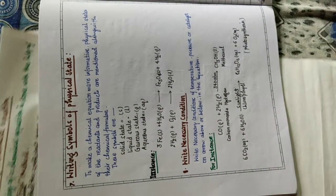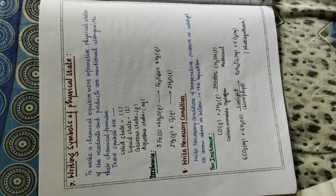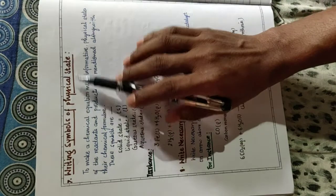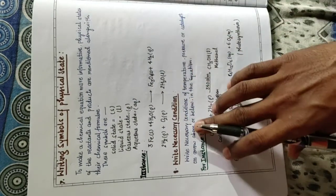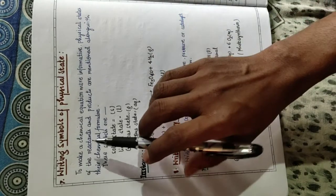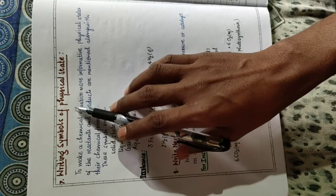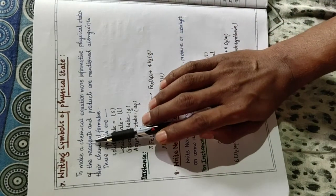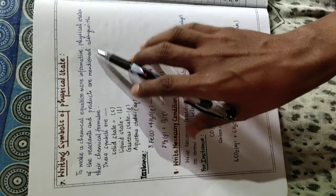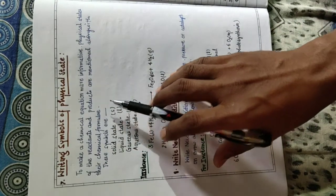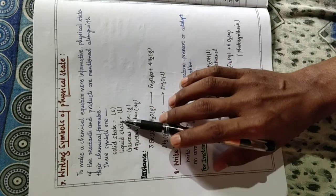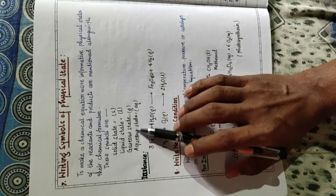To make a chemical equation more informative, we write the physical state and some necessary conditions used in the chemical equation. First, writing the symbol of the physical state: to make a chemical equation more informative, the physical state of reactants and products are mentioned along with their chemical formulae. The symbols are: (s) for solid state, (l) for liquid state, (g) for gaseous state, and (aq) for aqueous state.